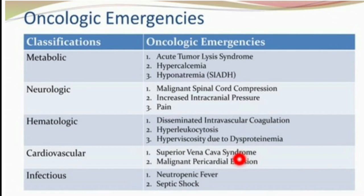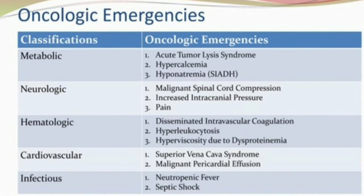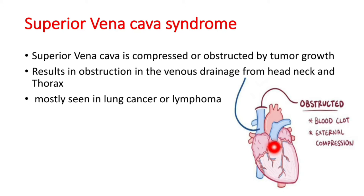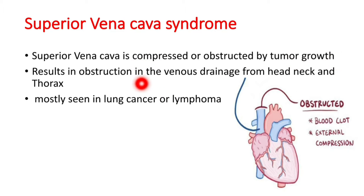In the infectious category, it includes neutropenic fever and septic shock. The first major one is superior vena cava syndrome. The superior vena cava is a vessel which brings deoxygenated blood from the head, neck, and thorax region. When there is any obstruction or compression of the superior vena cava because of any tumor growth, it results in obstruction of venous drainage.